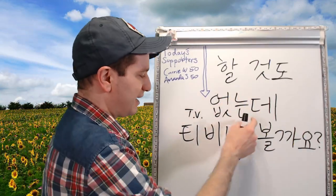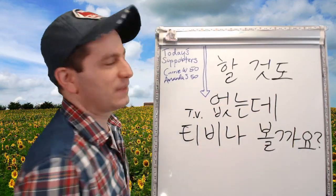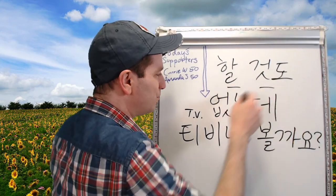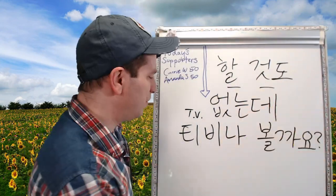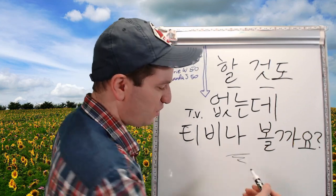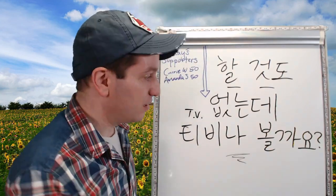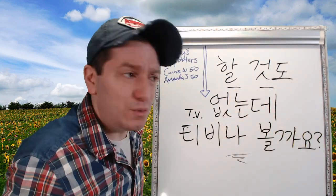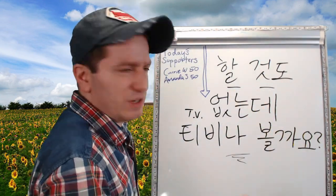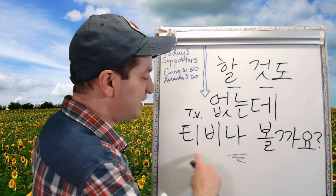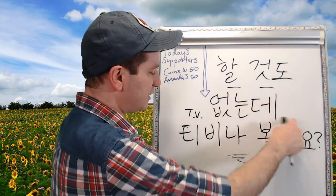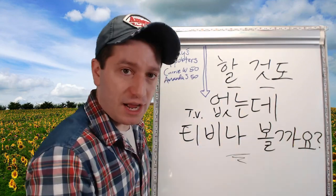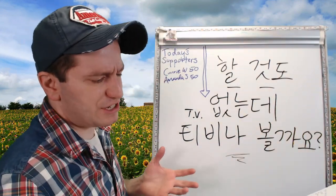Let's do an example sentence. 할 것도 없는데, TV나 볼까요? '할 것' means 'something to do.' '할 것도 없는데' means 'there's not even anything to do.' 'TV나' means 'TV or something.' '볼까요?' means 'shall we watch?' So: there's nothing to do — should we watch TV or something?